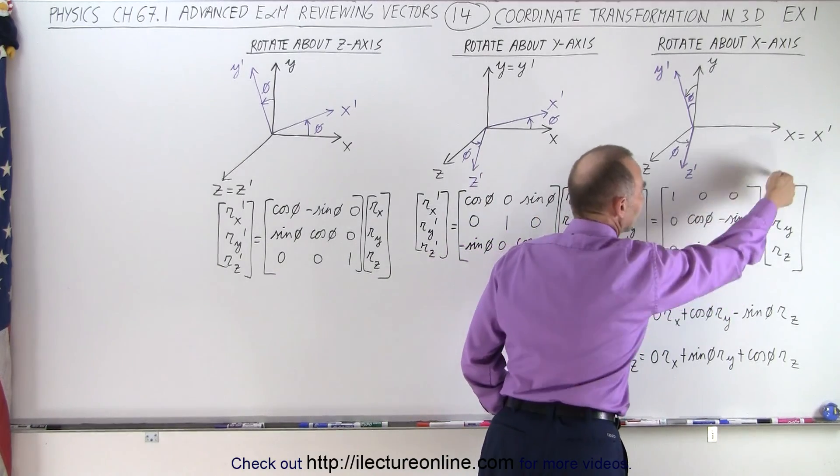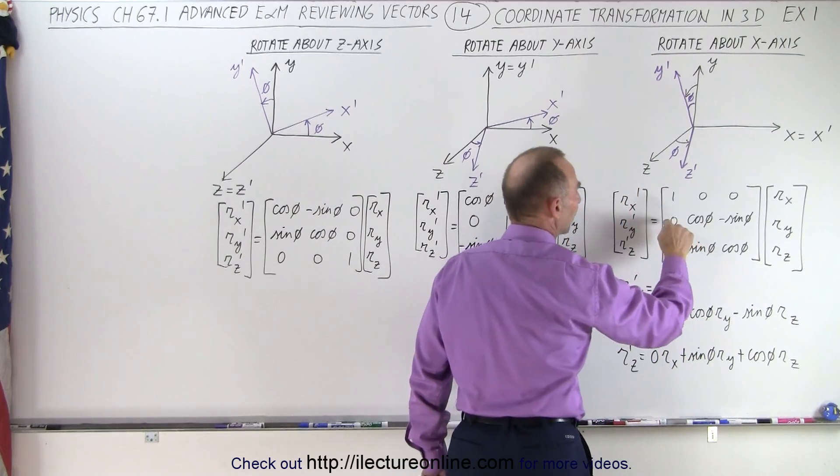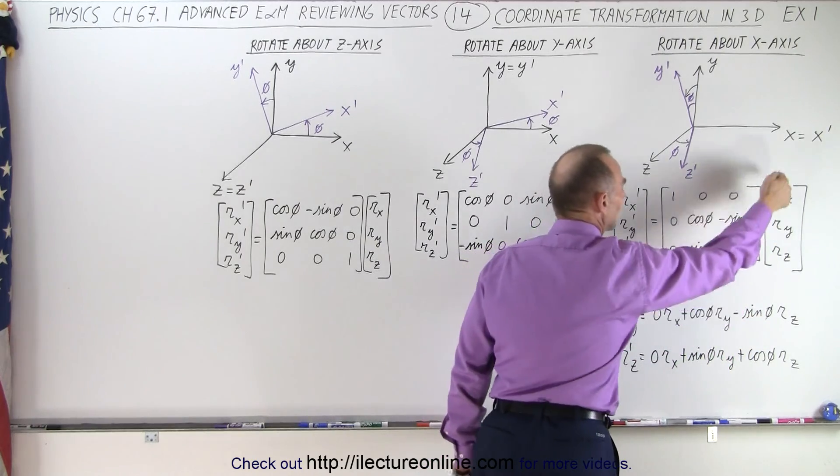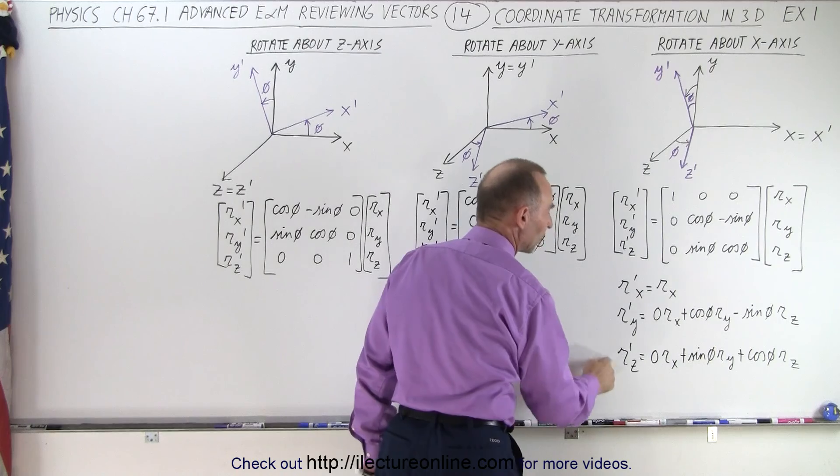And so what we did then is we multiply this row times this column to get the first equation. Then we multiply this row by this column to get the second equation. And this row by this column to get the third equation to get the RX prime, RY prime and RZ prime.